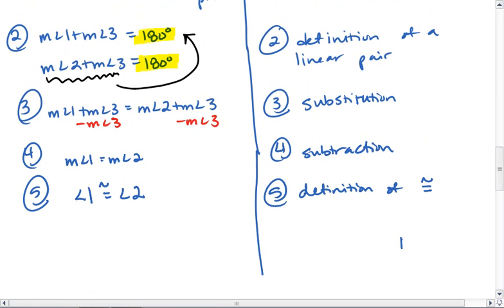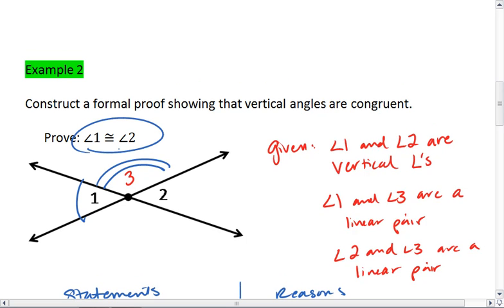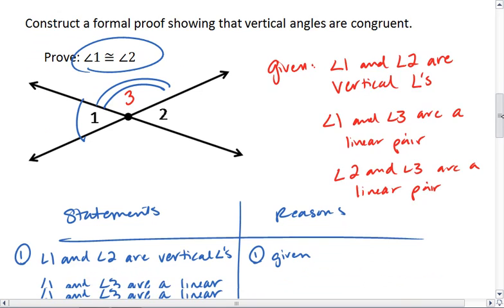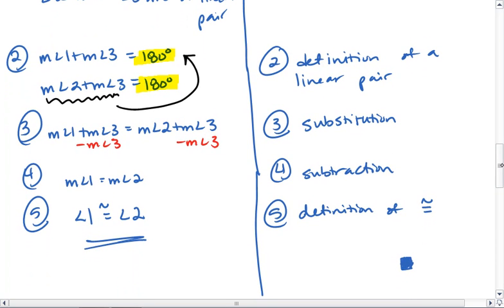If you want to, you can put this little shaded in box at the end that signifies the end of a proof. You do not have to. You can just leave it with our final statement. Notice our final statement is always what we were trying to prove. So this was a five-step proof. If this is still confusing to you, go back over this proof and make sure it makes sense.